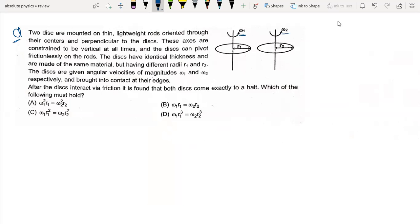One disk rotates at omega 1 and the other at omega 2. They have radii R1 and R2. The disks have identical thickness and are made of the same material, so the density is also the same. Both disks are brought into contact at their edges, and after the disks interact via friction, it is found that both disks come exactly to a halt. Both disks have stopped.